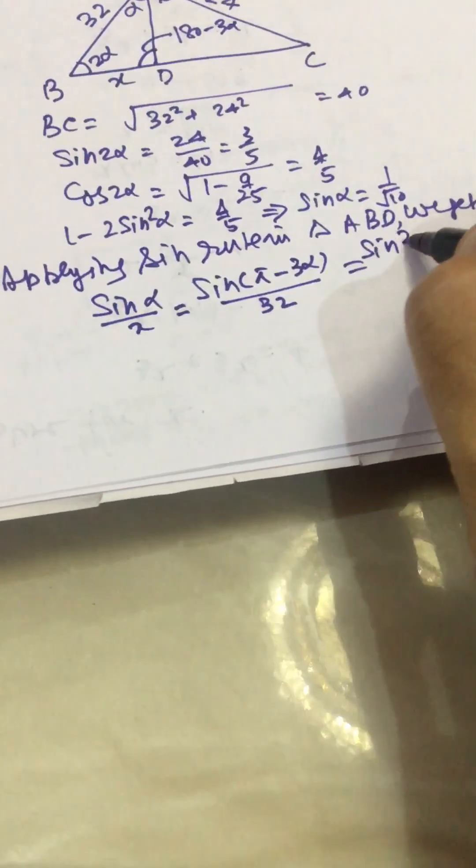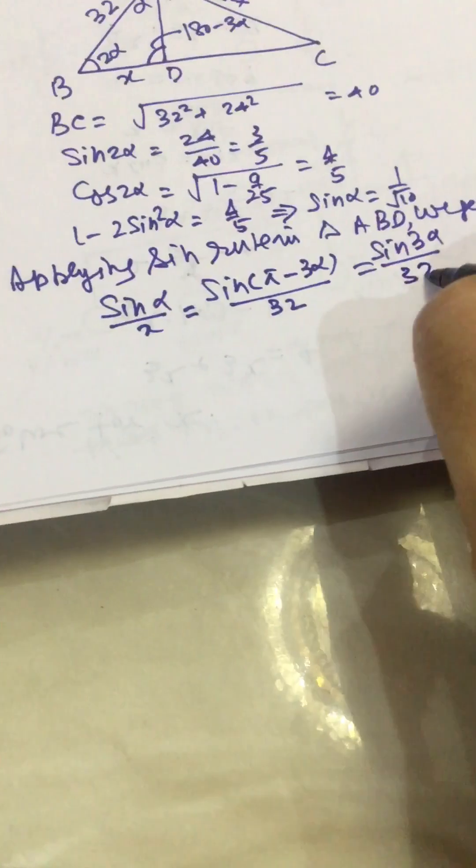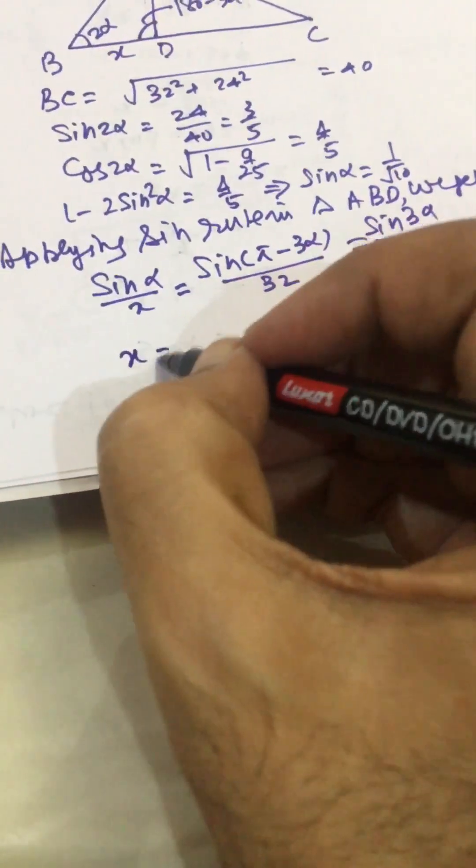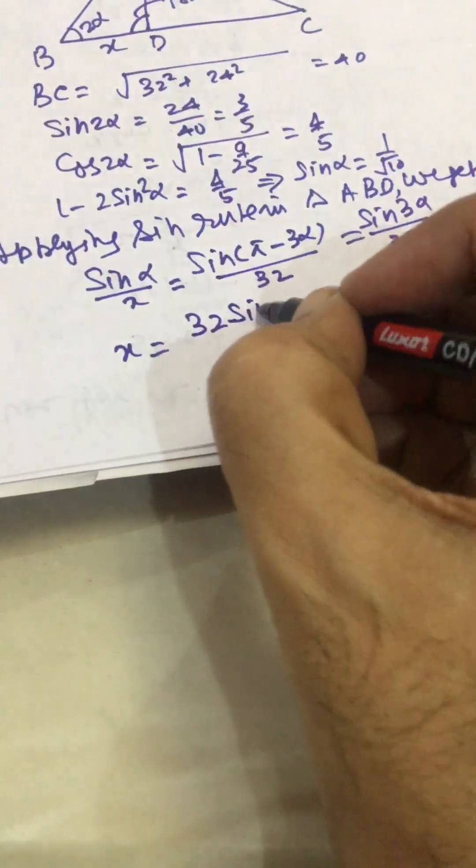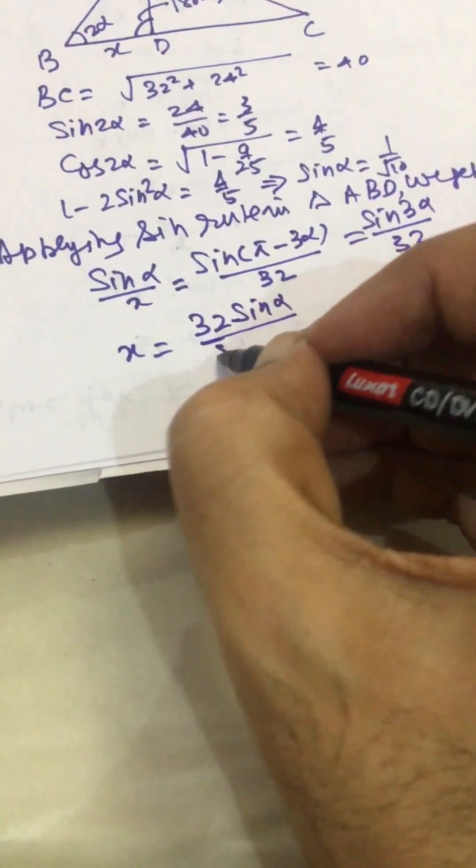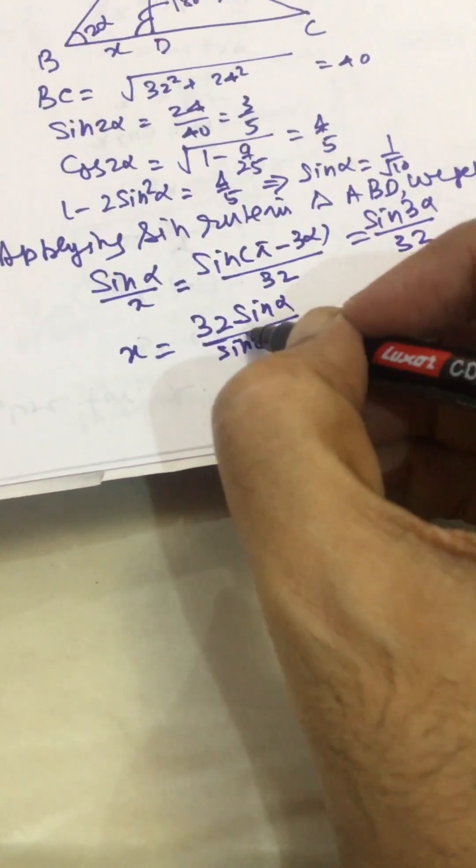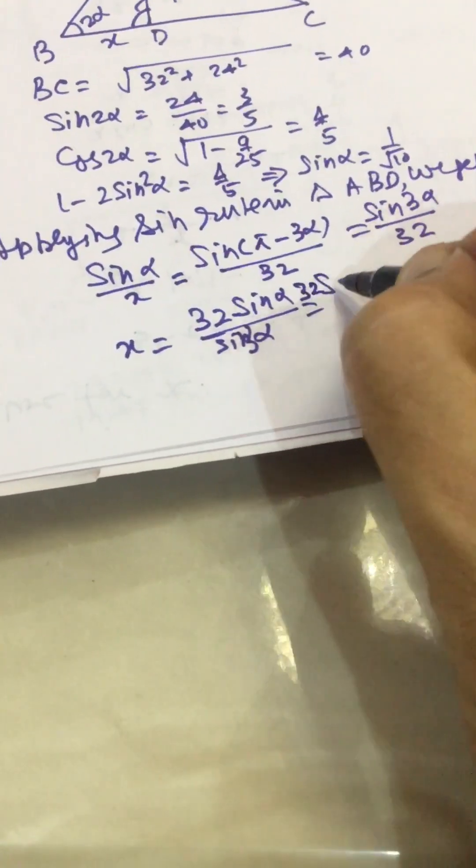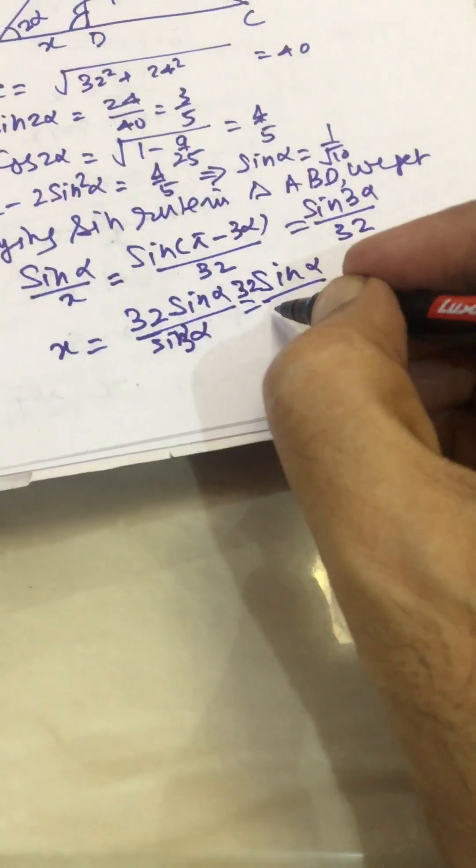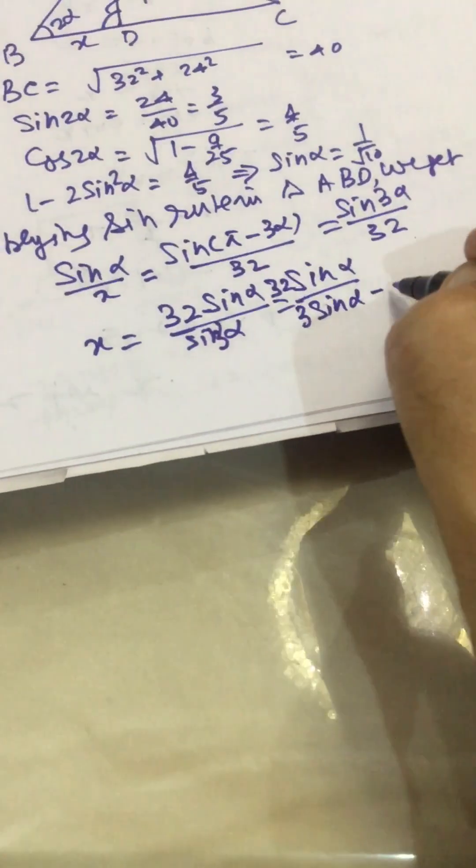So x is equal to 32 sin α upon sin 3α. Now sin 3α can be written as 3 sin α minus 4 sin³α.